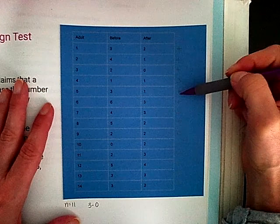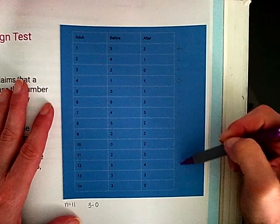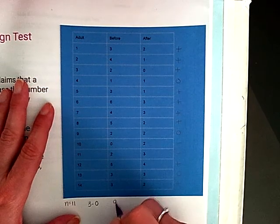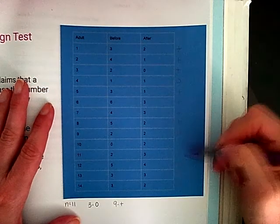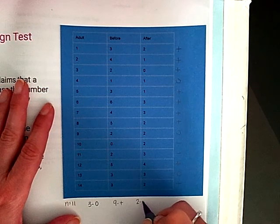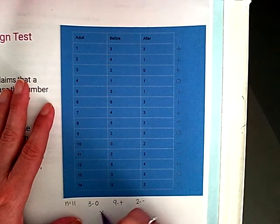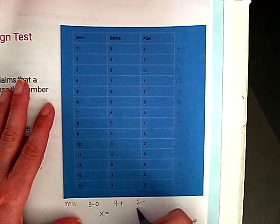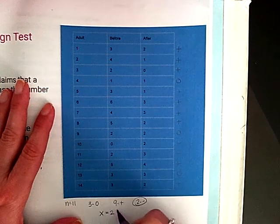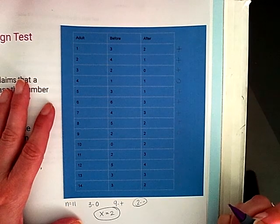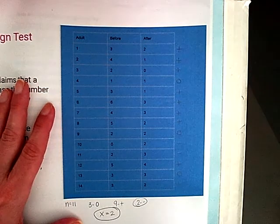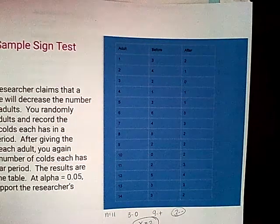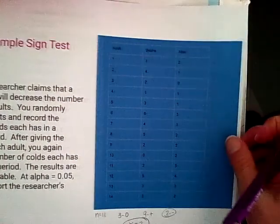I have 1, 2, 3, 4, 5, 6, 7, 8, 9 positive signs, and I have 2 negative signs. So that means when I'm looking at my test statistic, my test statistic is going to be x is equal to 2. So that's going to make this test go quite quickly because I don't have to use that normal distribution table.